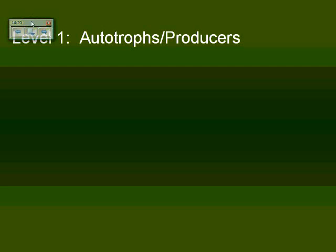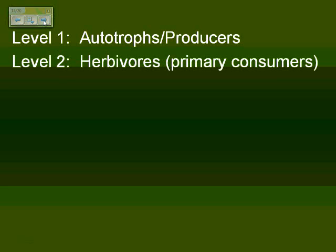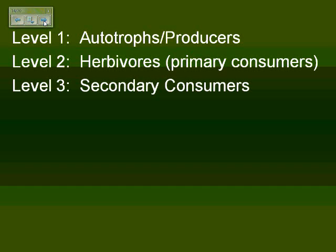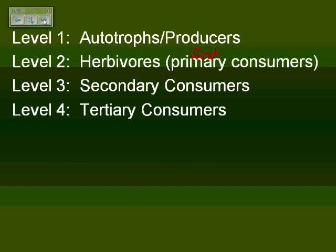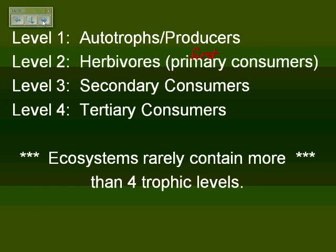Our first level is often referred to as the autotrophs, the producers. This shouldn't be very surprising since producers are what typically start the food chain. As we continue, herbivores will eat the producers, or primary consumers — they're the first consumers in a chain. Then we have secondary consumers, tertiary consumers, etc. Typically it's not really more than four levels. Every now and then you may get a quaternary consumer, but it's not very common.